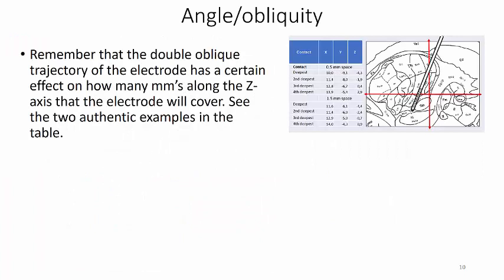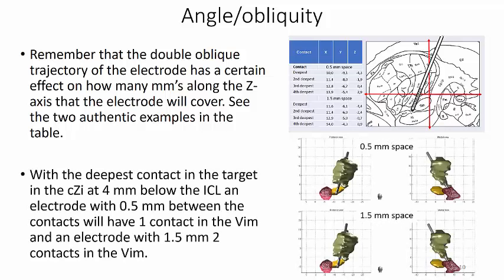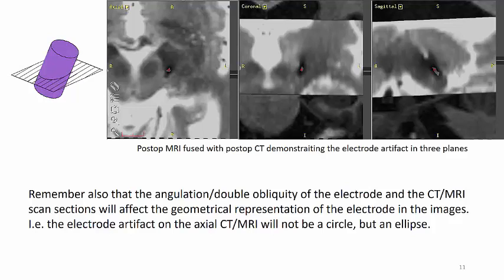Concerning the angle of implantation, one should remember that the double oblique trajectory of the electrode has a certain effect on how many millimeters along the z-axis the electrode will cover. See the two authentic examples in the table here. For example, with the deepest contact in the target in the zona inserta at four millimeters below the ICL, an electrode with 0.5 mm between the contacts will have one contact in the VIM, and an electrode with 1.5 mm will have two contacts in the VIM. Remember also that the angulation of the electrode and the CT/MRI scan sections will affect the geometrical representation of the electrode in the images, so the electrode artifact on the axial CT/MRI will not be a circle but an ellipse.